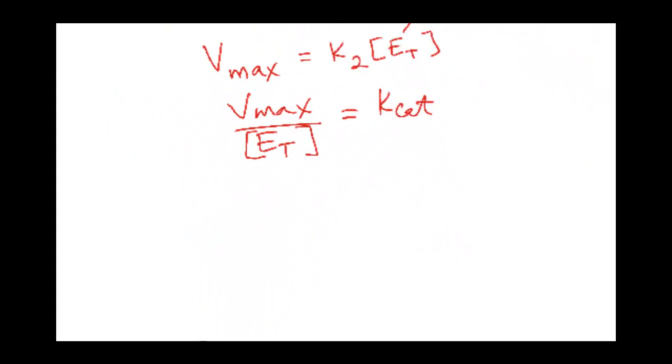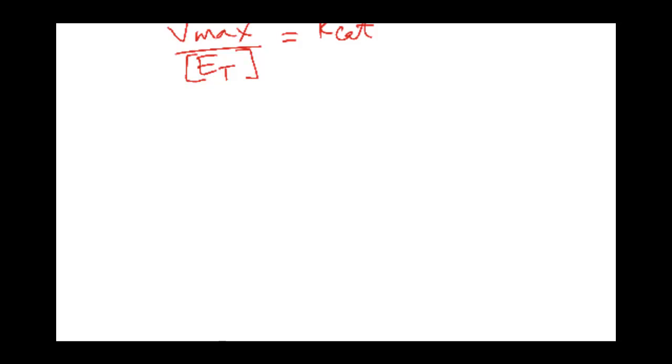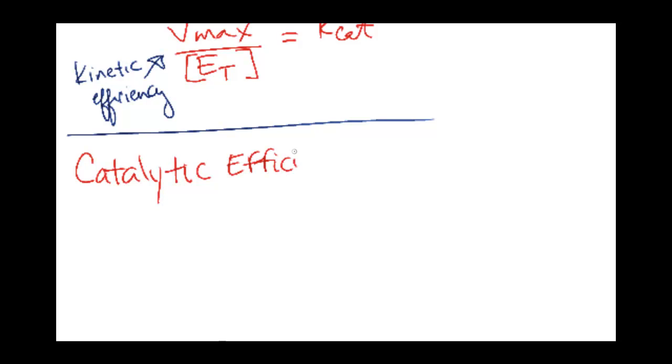Now let's talk about the ratio of k-cat to k-m. In other words, the catalytic efficiency of an enzyme, not the kinetic. This one up here is the kinetic efficiency. Now I'm going to talk about the catalytic efficiency. It's going to be the ratio of k-cat over k-m.